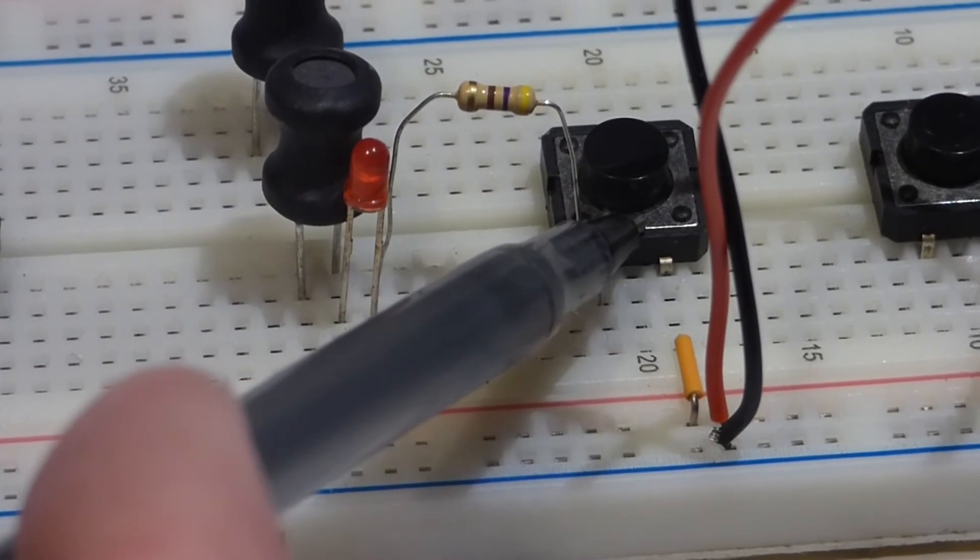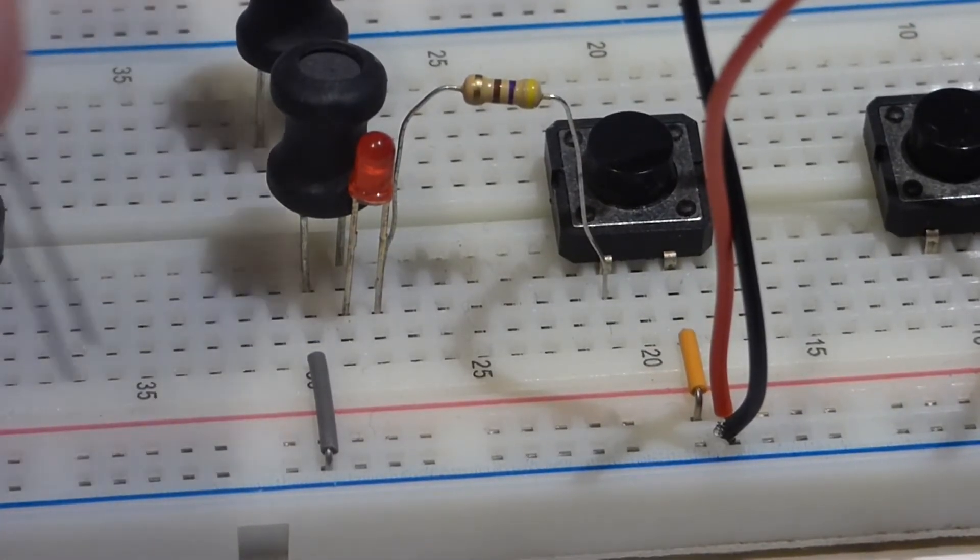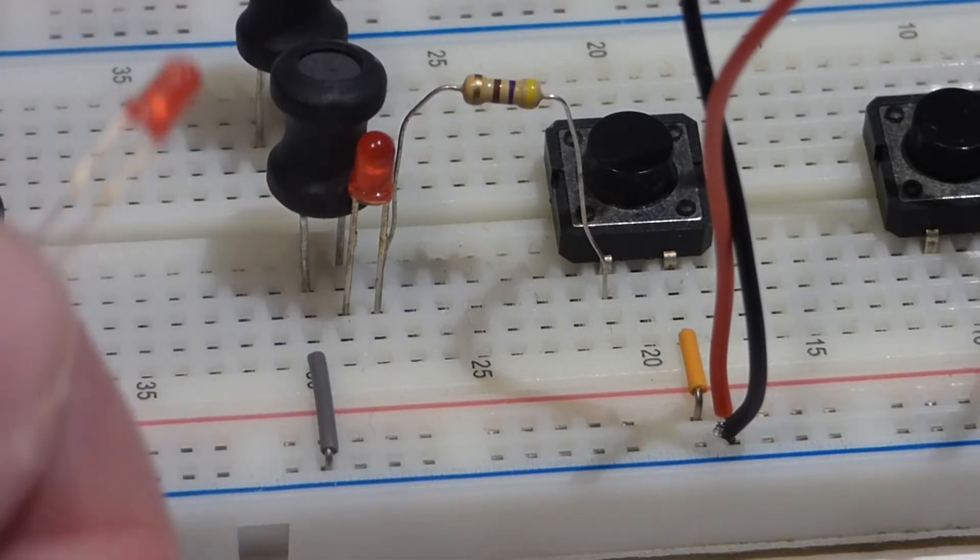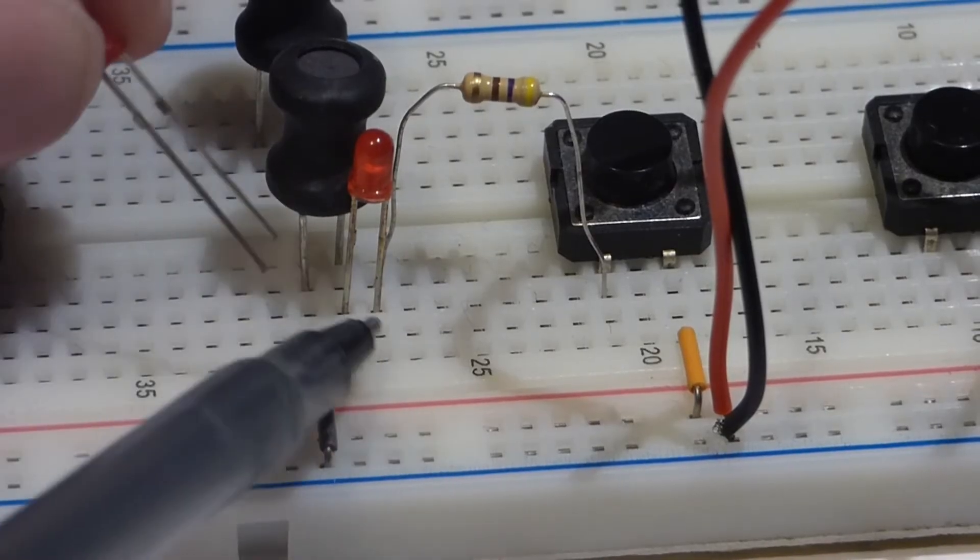It keeps that current flowing through the switch even, and it creates a little high voltage spark until the magnetic field collapses. What we do is we take another LED in this case, a diode though.